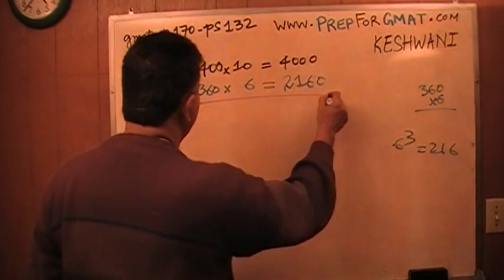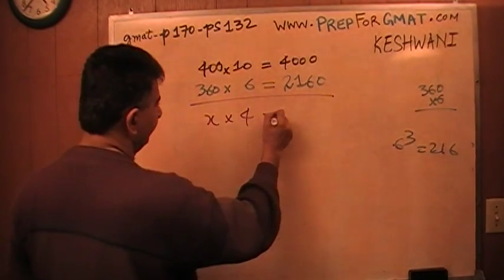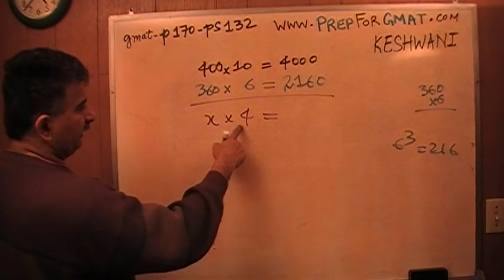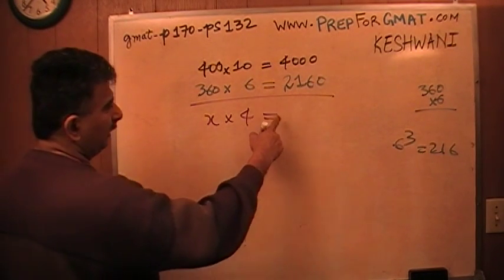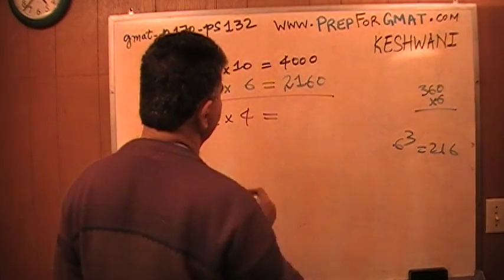So that tells me that the average of the other four, I'm going to call it x, the average of the other four days times 4 has to be the difference of the two, which is 4,000 minus 2,160.